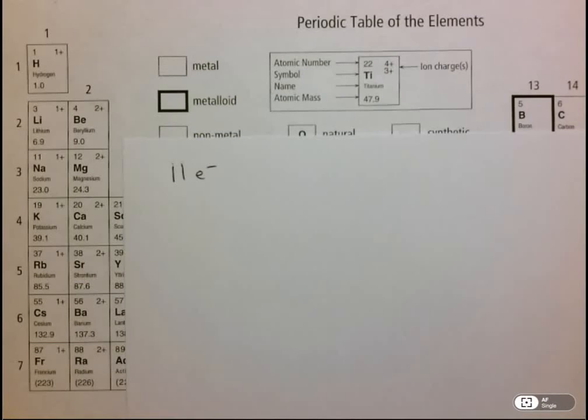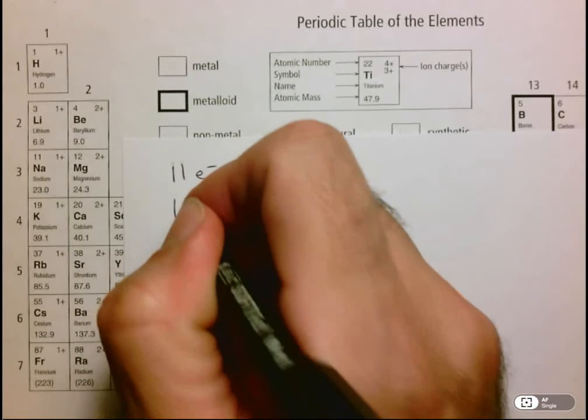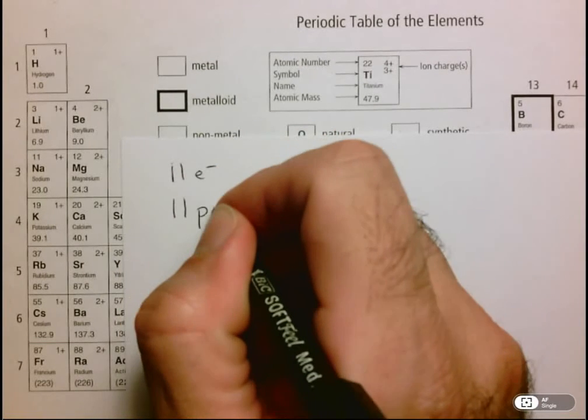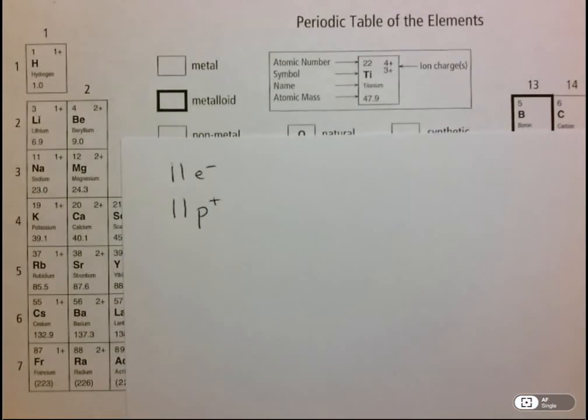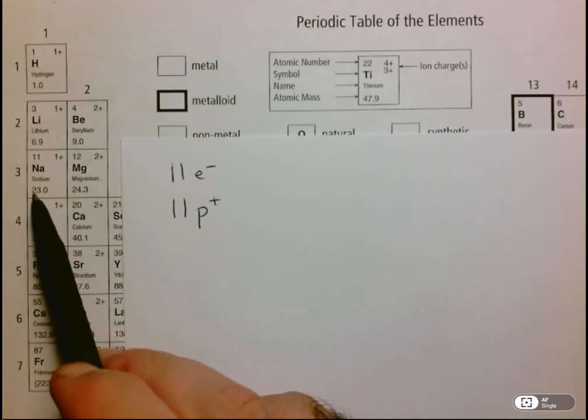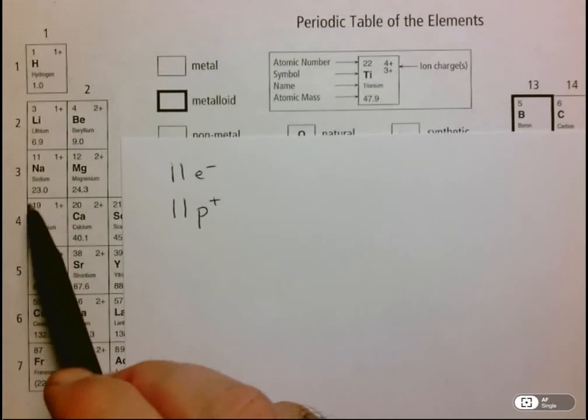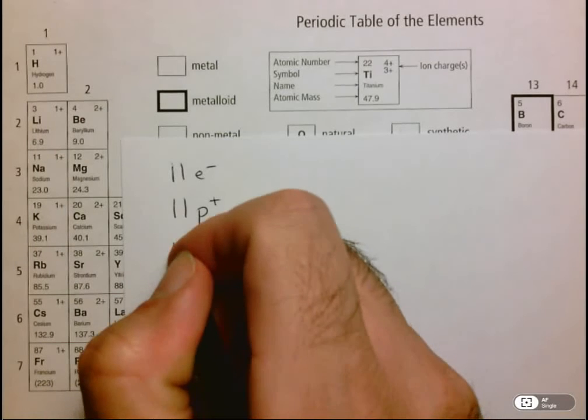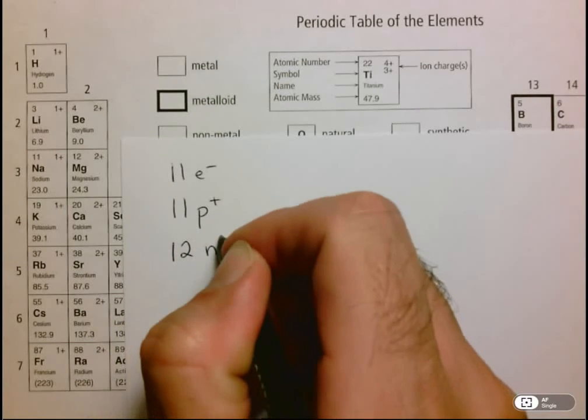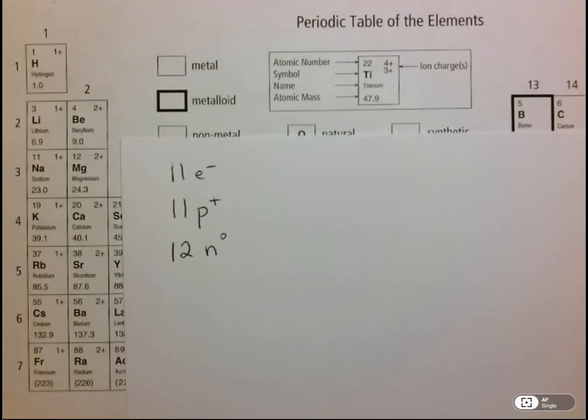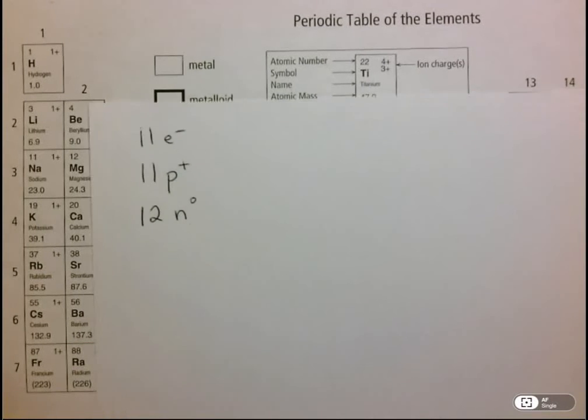We start with the atomic number 11, so that tells us that there's 11 electrons, negatively charged, and 11 protons, positively charged. We subtract the atomic mass by the atomic number to get the number of neutrons, so 23 minus 11, that means there are 12 neutrons, which is a neutral particle with no charge.